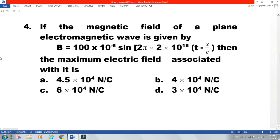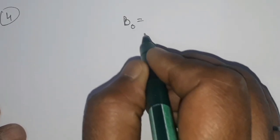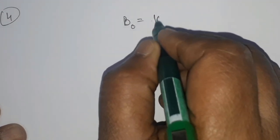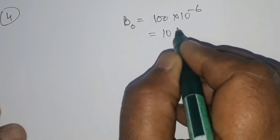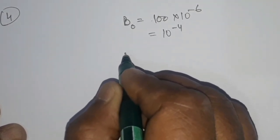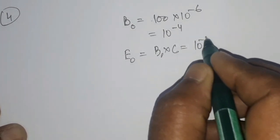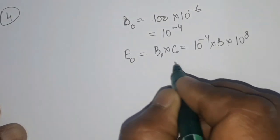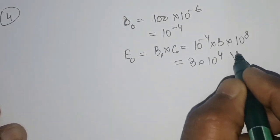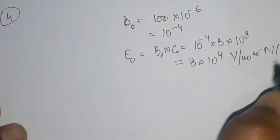Question four: if the magnetic field of a plane electromagnetic wave is given by B = 100×10⁻⁶ sin(2π...), find the maximum electric field. The maximum magnetic field B₀ = 100×10⁻⁶ = 10⁻⁴ T. Then E₀ = B₀ × c = 10⁻⁴ × 3×10⁸ = 3×10⁴ volts per meter, or equivalently Newtons per Coulomb.